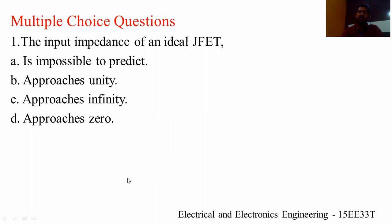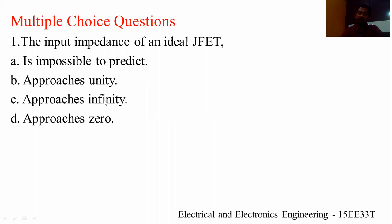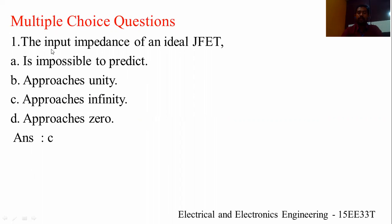Let's discuss some multiple choice questions. The first question: the input impedance of an ideal JFET is — options are: (A) impossible to predict, (B) approaches unity, (C) approaches infinity, (D) approaches zero. The answer is option C — approaches infinity. As mentioned, the input impedance of FETs is very high compared to BJT. Input impedance means resistance plus reactance. The input impedance is so high that FETs are much used in digital circuits.